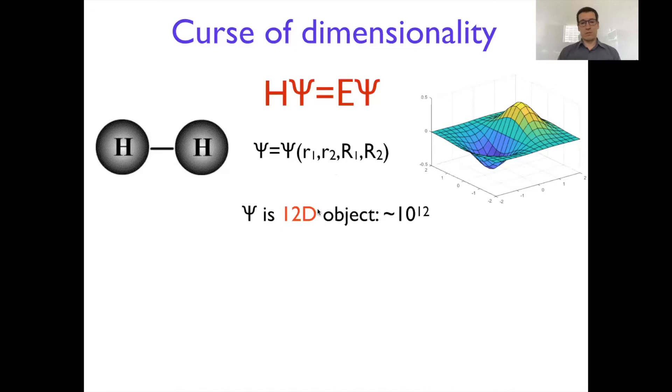In each dimension, let's say you put 10 points, then for a 12-dimensional object it would require you to use a trillion of points. To see how dimensionality essentially goes to exponent, you can simply consider a simpler example, two-dimensional object.